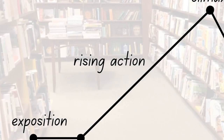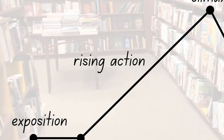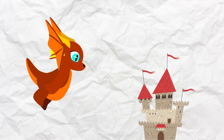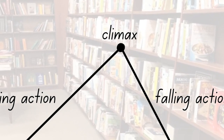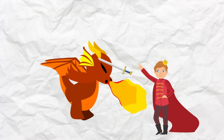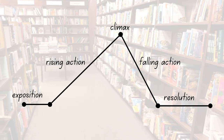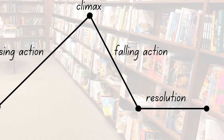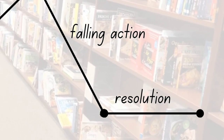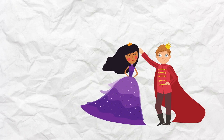Next, you have your rising action. This is where the conflict gets introduced and starts building up. In your classic fairy tale, this might be something like a dragon coming to attack the kingdom. Then you have the climax, which is basically the height of the conflict — the most exciting part of the story. So now you have the prince fighting the dragon. Maybe it looks like the dragon is going to win, but eventually the prince slays the dragon. That brings us to falling action, when things start to calm down and you introduce a solution to the problem. The dragon has been slain, the princess has been saved. And finally, you have your resolution, when the problem has been solved and the conflict is over. In your fairy tale, this is usually a wedding.